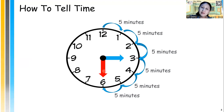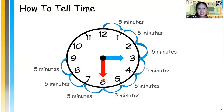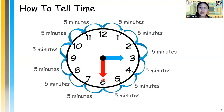When the long hand points at number 6, that means half past, which means 30 minutes past. The total minutes on every hour is 60 minutes.